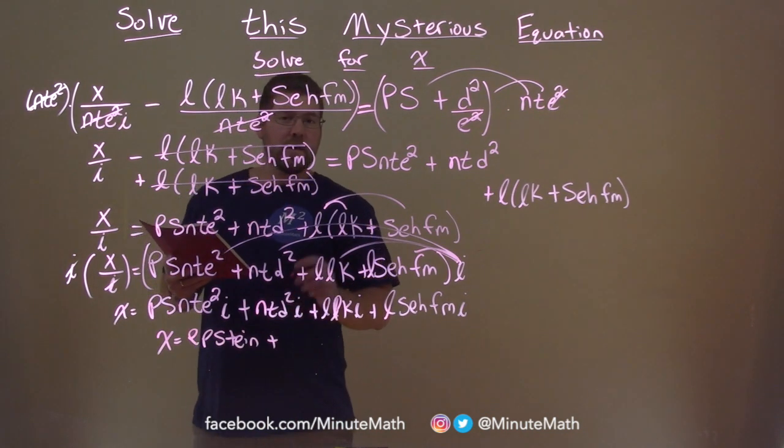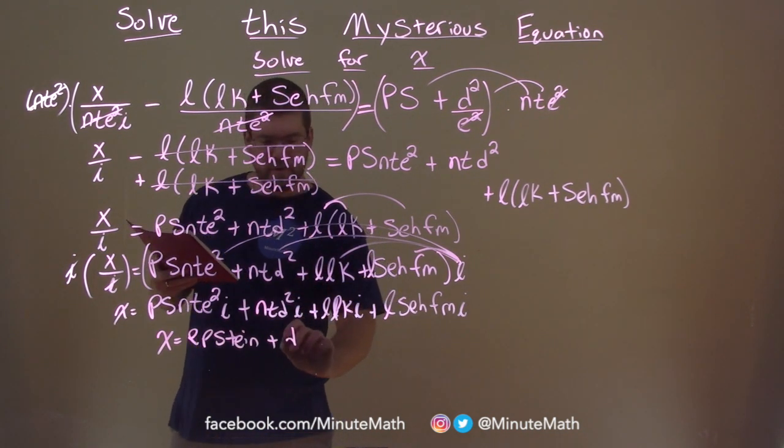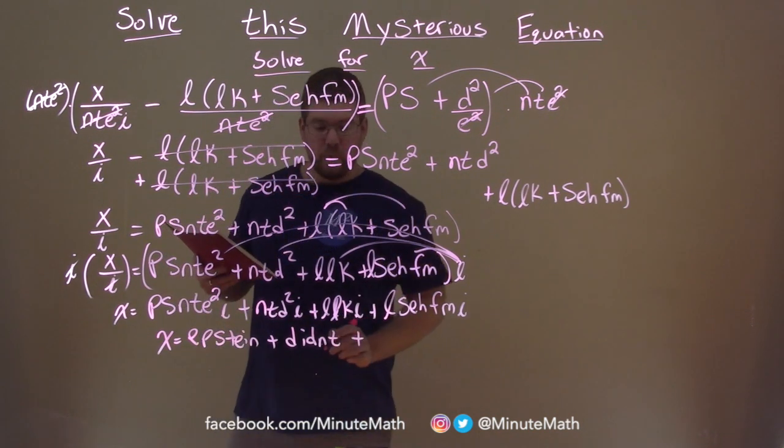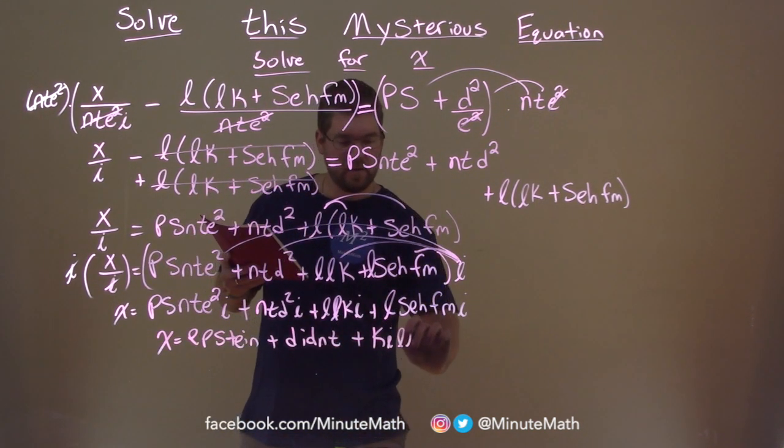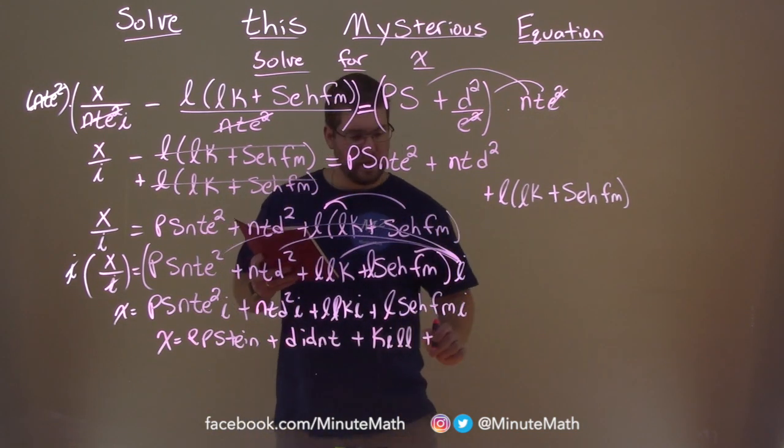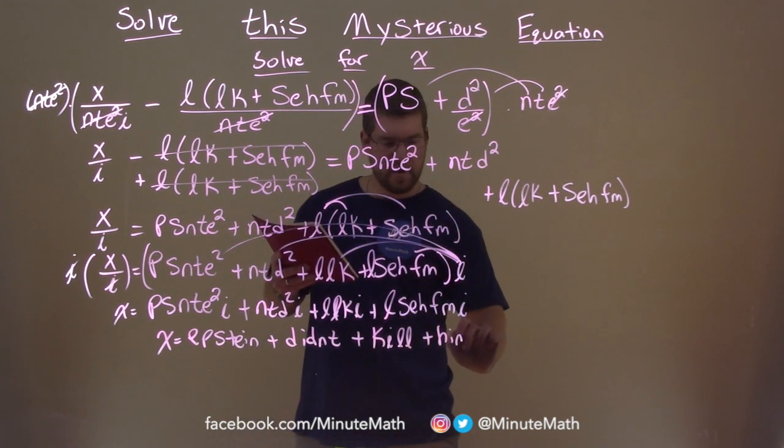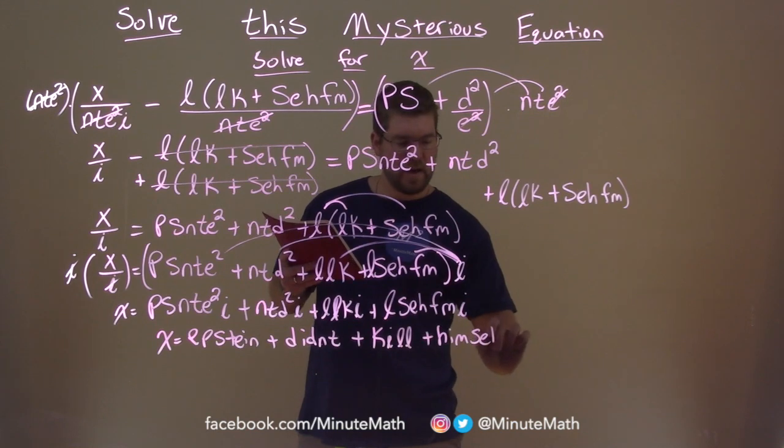Plus, d squared is d times d. So we have d, i, d, n, t. Plus, here, k, i, l, l. And lastly, h, i, m, s, e, l, f.